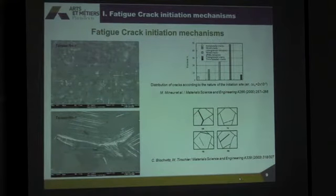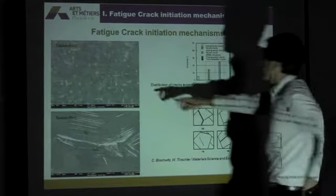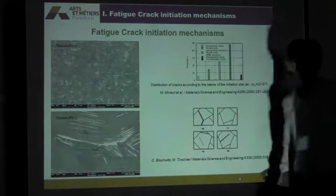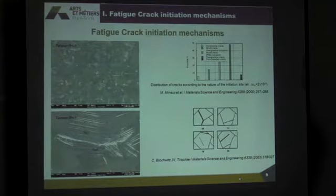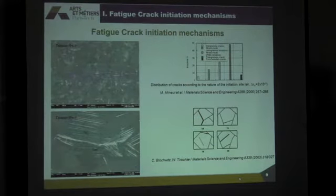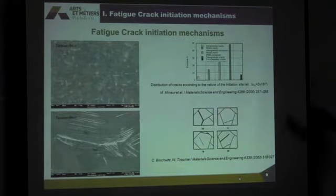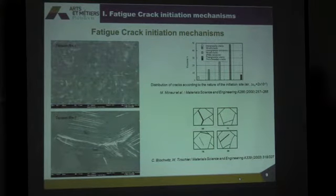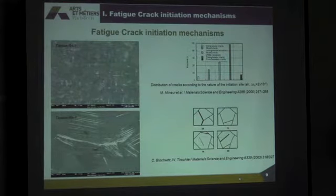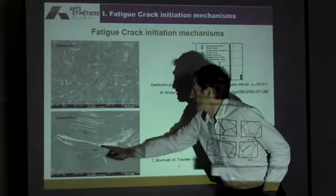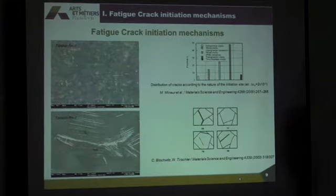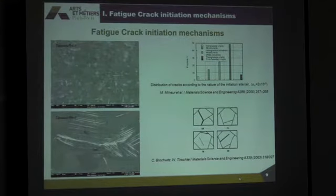When no defect is introduced, what we observe is this kind of thing. For instance, here in torsion, you see many plastic activity in different grains. And if we take a closer look at some of the grains, we can see that the mechanisms of crack initiation can be very different. We can have transgranular cracks, intergranular cracks, cracks that initiate and grow at twin boundaries. We can also have mixed cracks — cracks that initiate at a grain boundary and then propagate inside a grain. So there are many different ways for a crack to initiate.